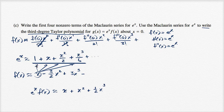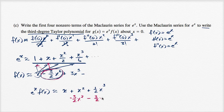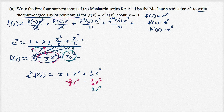Now distributing the negative three halves x squared: that times one gives minus three halves x squared, and that times x gives negative three halves x to the third. I'll stop there since the next multiplication gives a fourth degree term. Then distributing the three x to the third term: three x to the third times one gives three x to the third. I'll stop there since multiplying further gives fourth, fifth, and sixth degree terms which I don't need.